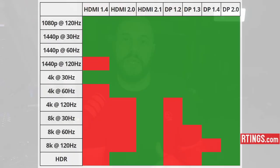HDMI 1.4 won't support 1440p 144Hz, but HDMI 2.0 will, for example. HDMI 2.1 has been a major improvement over all previous versions and has finally edged its way over DisplayPort 1.4, providing a very wide array of resolution and refresh rate support. HDMI 2.1 just barely passes DisplayPort 1.4 because it supports 8K 120Hz, which DisplayPort 1.4 does not.